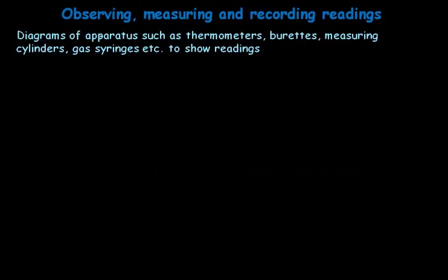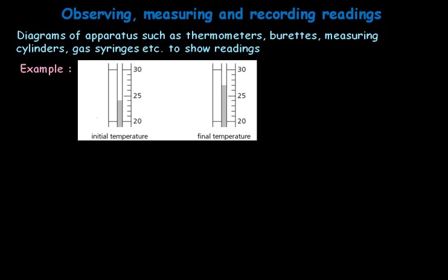Paper 6 may also involve observing, measuring, and recording readings. Diagrams of apparatus such as thermometers, burettes, measuring cylinders, and gas syringes may be shown, and you are supposed to note the correct readings from those diagrams. For example, a thermometer diagram may show 20 and 25 on the scale — the correct reading might be 24 degrees, but if you read from the top by mistake you might incorrectly read 26 degrees. Reading diagrams correctly is therefore very important.